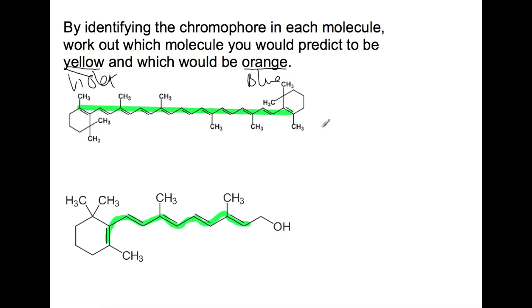So here where we've got a rather long conjugated system, your HOMO LUMO gap will be smaller, which means that the energy absorbed will also be smaller.